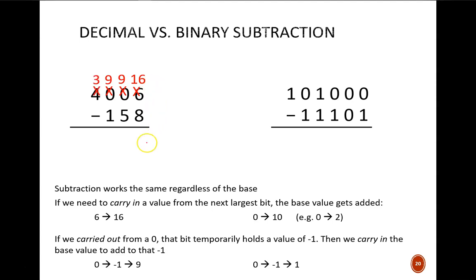That was tricky work, but now each column is set up to be able to subtract directly. 16 minus 8 gives 8, 9 minus 5 gives 4, and so on.